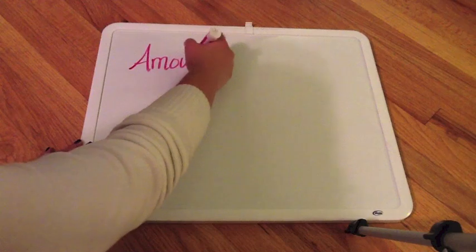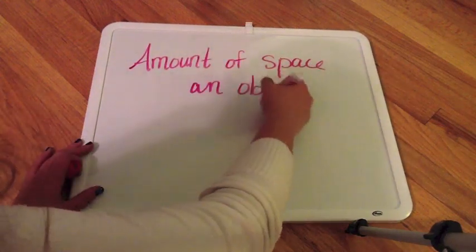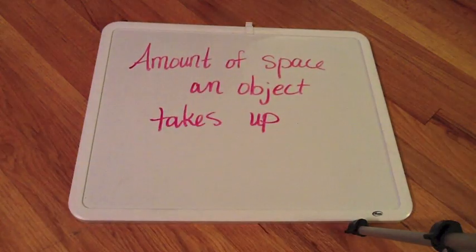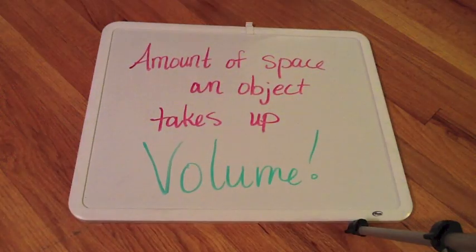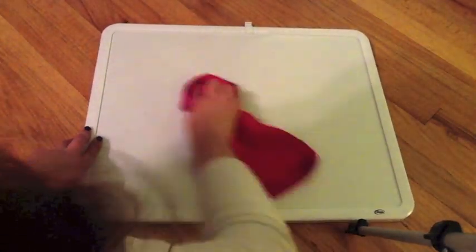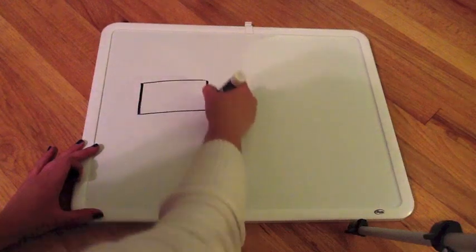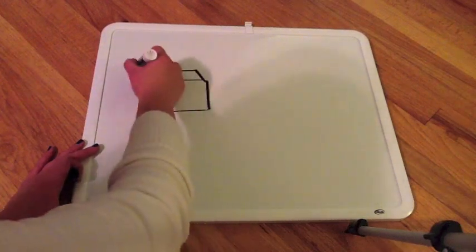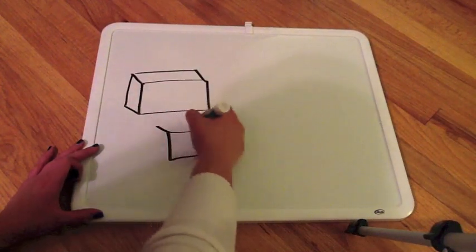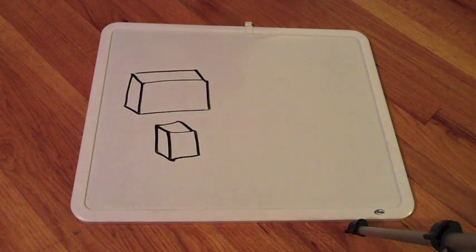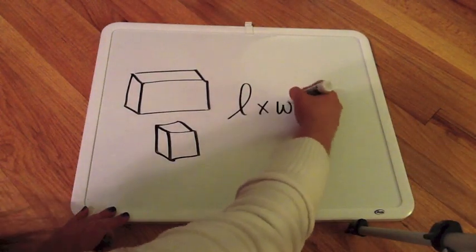Now we also have to talk about the amount of space an object takes up, because that's the second half of the matter definition. Well, this is volume. So there are two different ways to calculate volume. If you have something like a rectangular prism or a cube, then you can use the formula length times width times height.